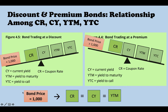First, if the bond is trading at par value, which is $1,000, you would expect the coupon rate is exactly equal to the current yield, equal to the yield to maturity.